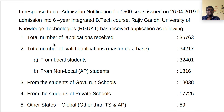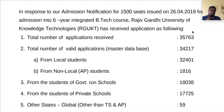Regarding last year's notification: total RGUKT applications were 35,763. The number of valid applications was 34,217. Some students submitted multiple applications knowingly or unknowingly, and missing proper certificates like income certificates also caused invalid applications.